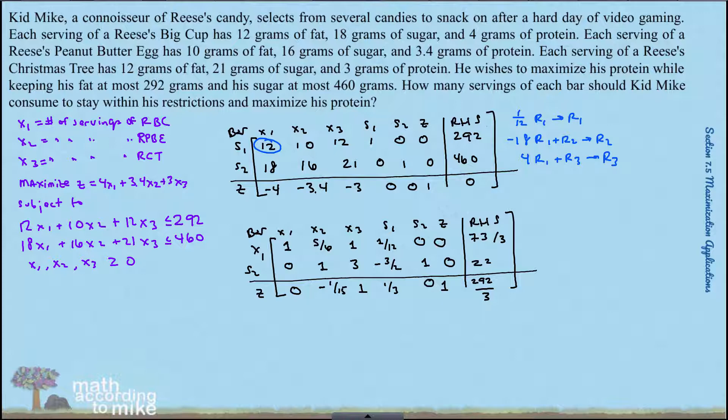—the one in the X2 column. 21 firsts is smaller than 73 thirds over five sixths. So a couple more steps there, and this will actually be the last pivot, so that's good news. So pivot and then think about the interpretation, because remember these are word problems, so you need to interpret your answer.